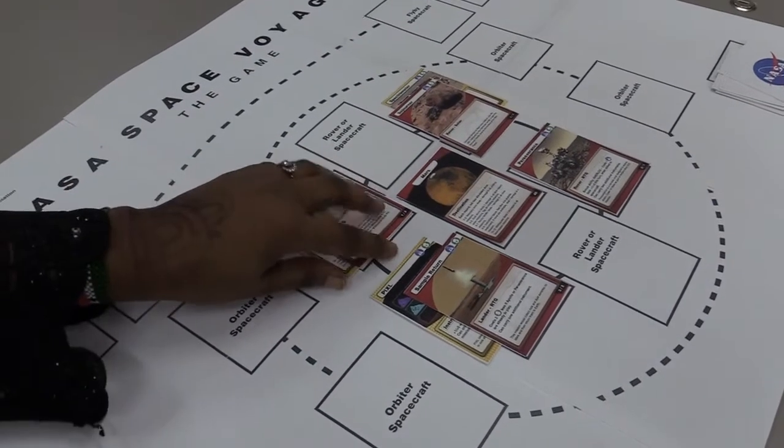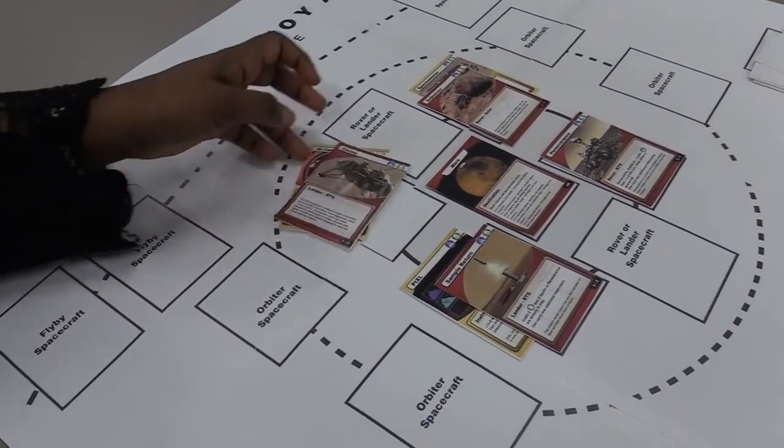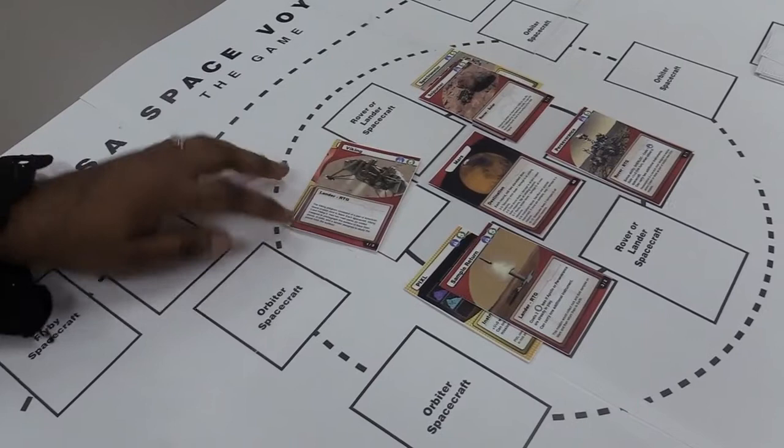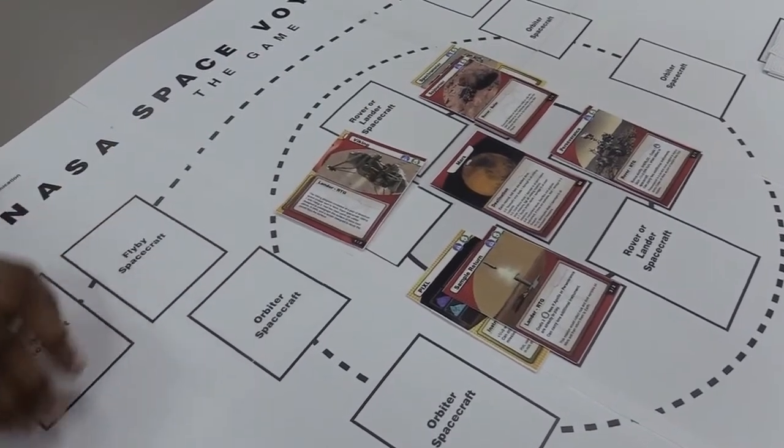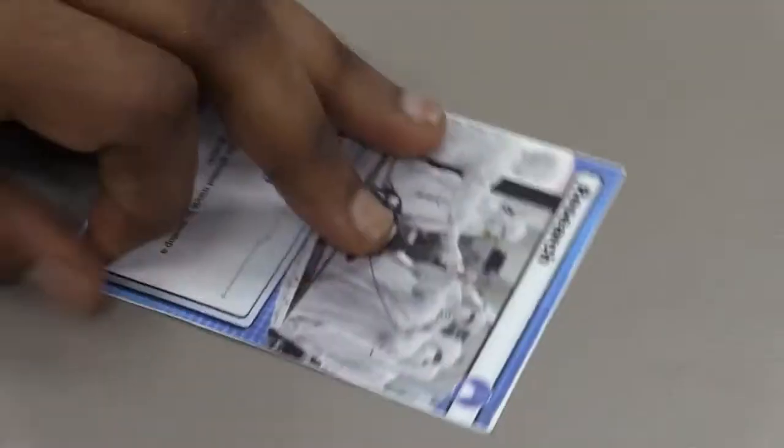Tap all used spacecraft and resources. Turn all used spacecraft and resources cards sideways. They cannot be used again until the next round.